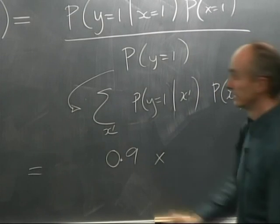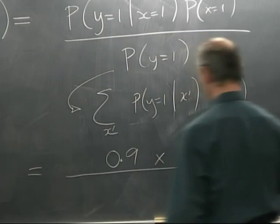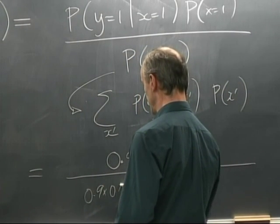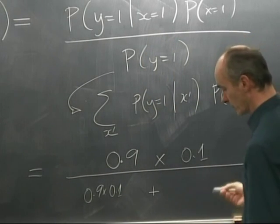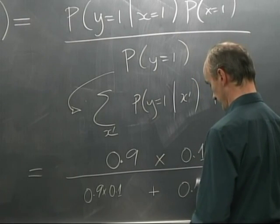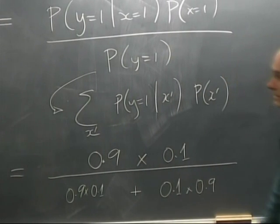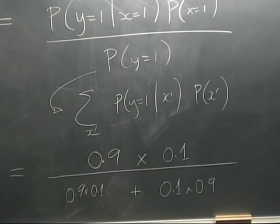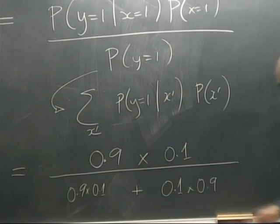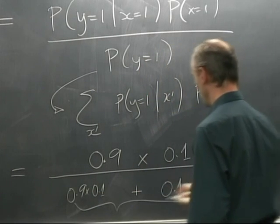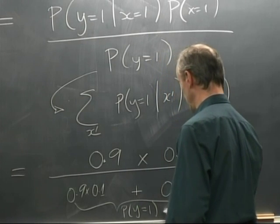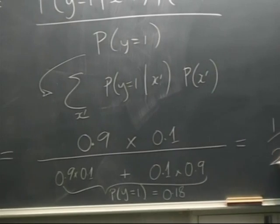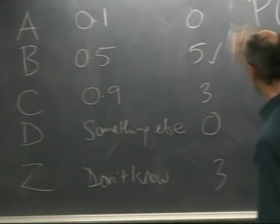In the denominator we have that term plus the other way of getting a one out: a zero was put in and it got flipped. The probability of it not being a one is 0.9, and the probability of it being flipped is 0.1. So those are the two explanations. The probability of Y=1 is 0.18. When we compute the ratio, it all cancels nicely and we get one-half. The correct answer is P(X=1 | Y=1) = 1/2.